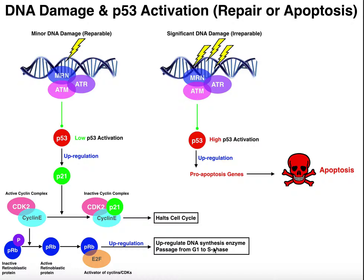In the case of significant DNA damage that we're going to consider irreparable — meaning there's so much damage that the cell is going to commit suicide instead of risking trying to repair and potentially giving mutations to future cell lines — we have the same complex of proteins that assemble at the sites of DNA damage, but because there's a lot of DNA damage, you have a really high degree of p53 activation.